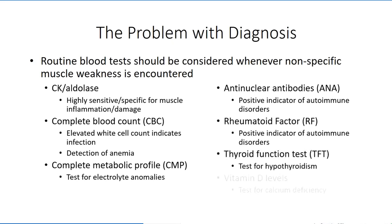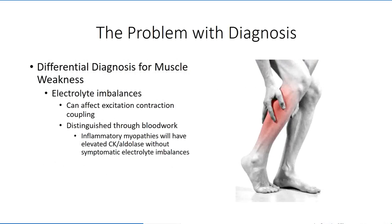In contrast, blood tests showing abnormalities in electrolyte balance, anemia, or thyroid function may lead physicians to consider other causes of muscle weakness. A common cause of muscle weakness is electrolyte imbalances, which are easily identified through blood work. Similarly, vitamin D deficiencies may indirectly indicate irregularities in calcium homeostasis, another cause of general fatigue and muscle weakness. Significant findings related to electrolyte imbalance should direct physicians away from the inflammatory myopathies, whereas elevation in these other markers indicates that inflammatory myopathies should remain in the differential diagnosis.